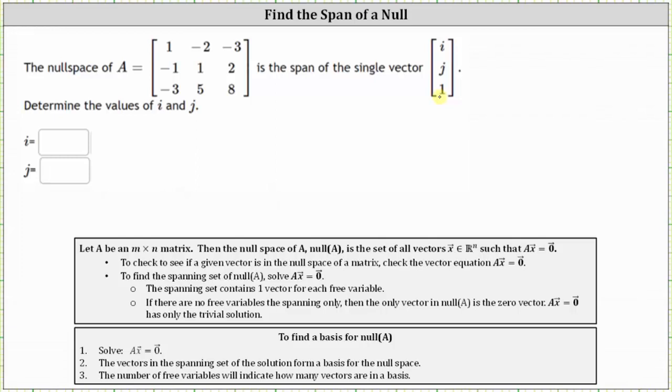The null space of A is a set of all vectors x in R^n such that A times vector x equals zero. To find the spanning set of the null space of A, we solve the equation A times vector x equals zero.